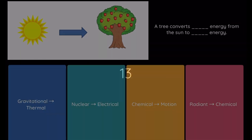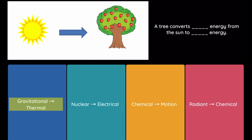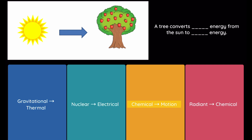Question: A tree converts blank energy from the sun to blank energy. Option 1: gravitational, thermal. Option 2: nuclear, electrical. Option 3: chemical, motion. Option 4: radiant, chemical.